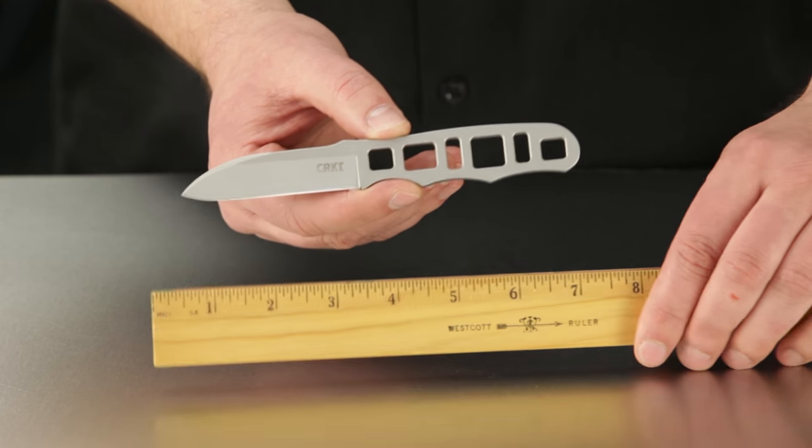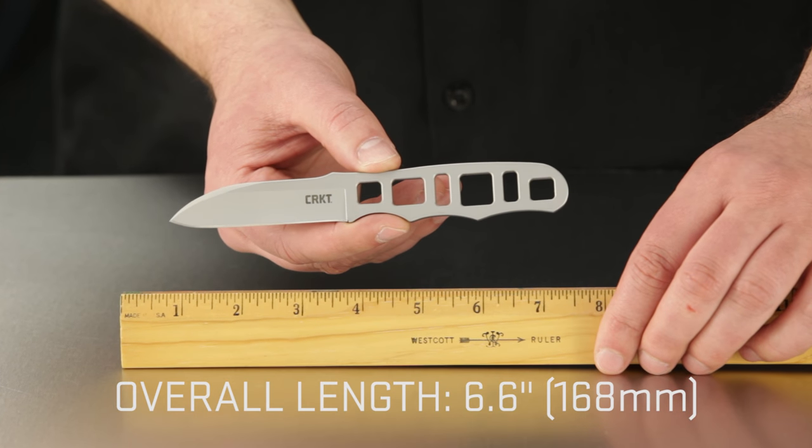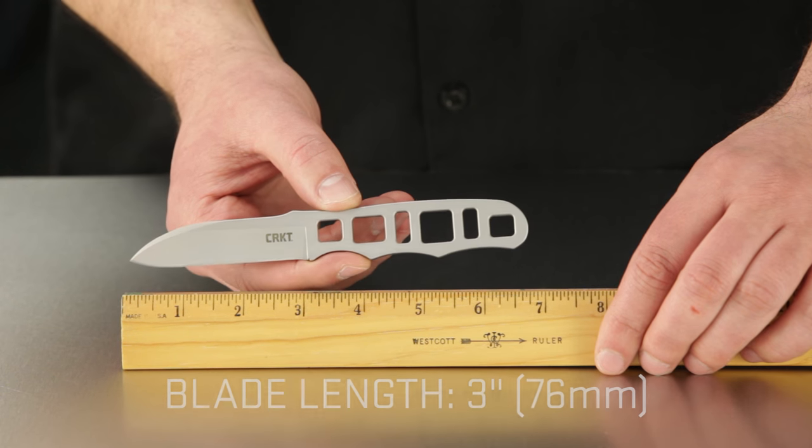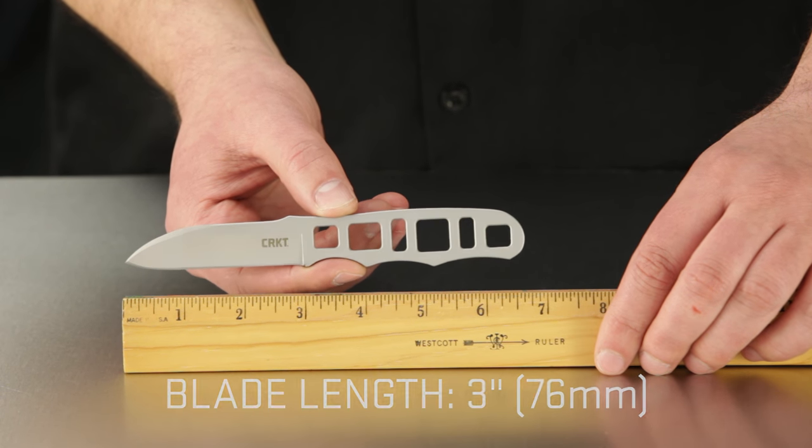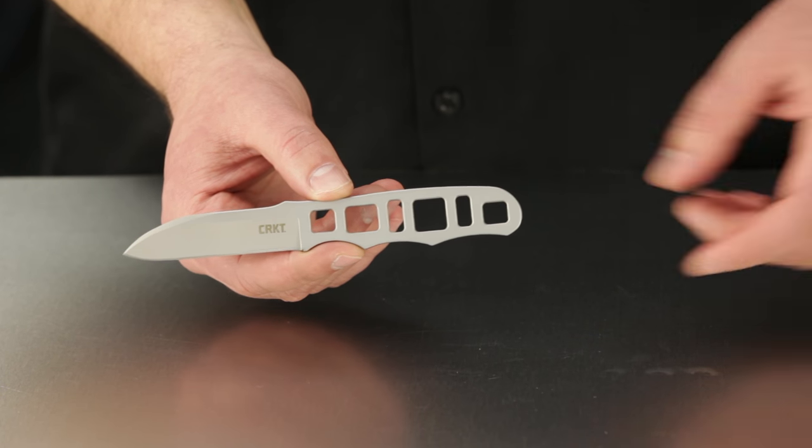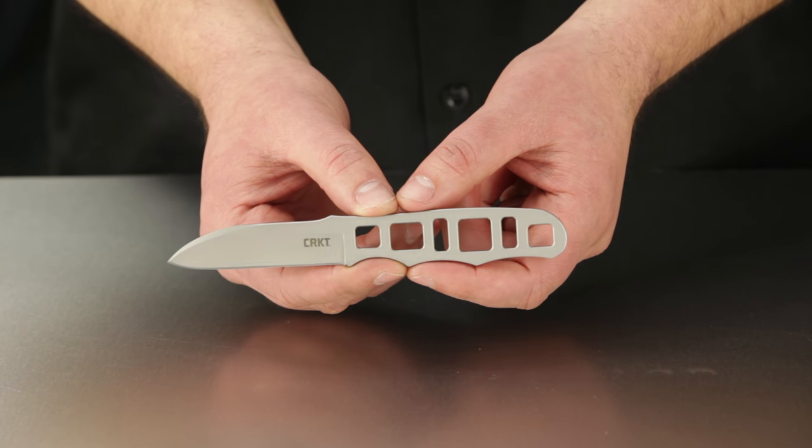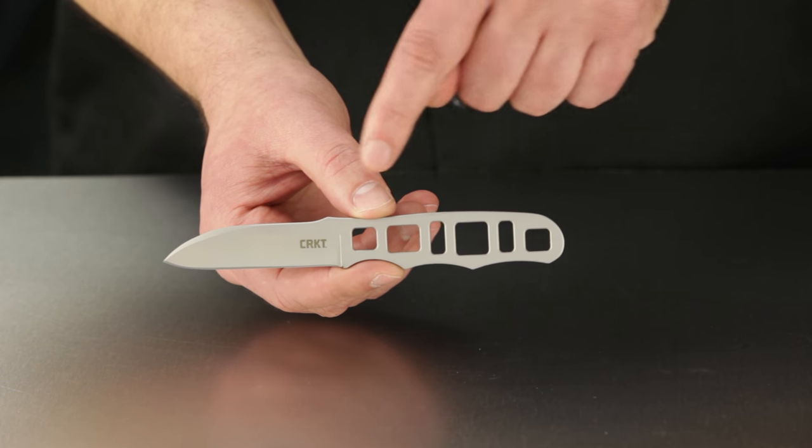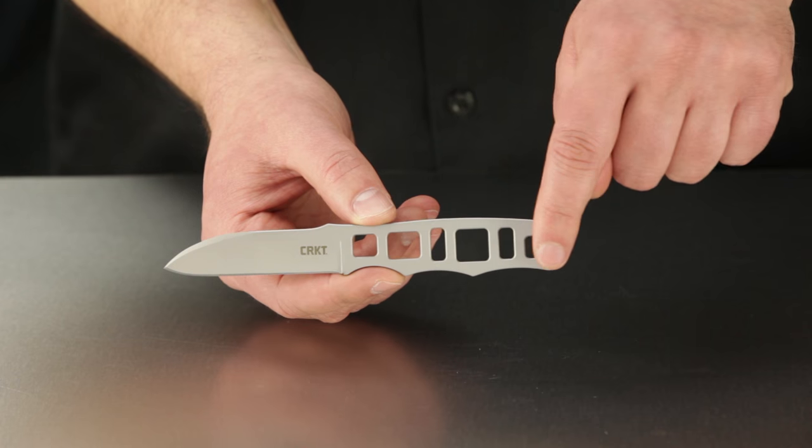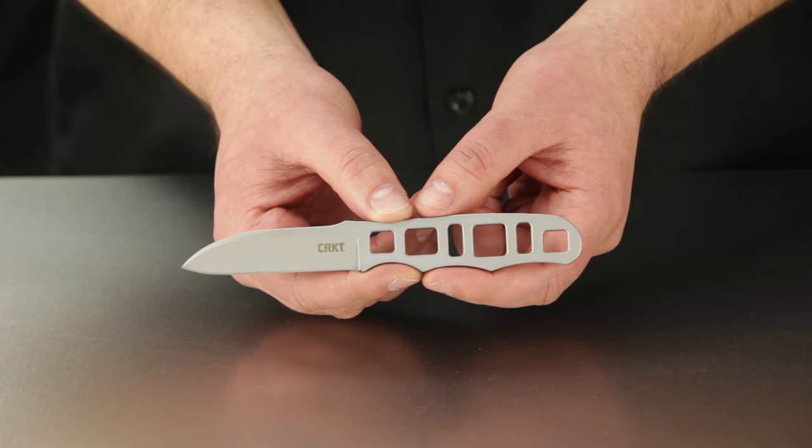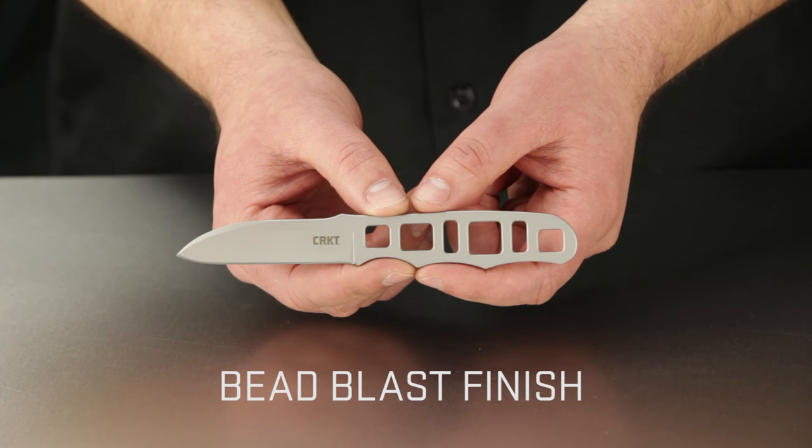The overall length of the tool is approximately 6.6 inches. The blade itself is just under 3 inches. The whole knife is one slab of stainless steel including the weight-saving skeletonized handle, and it's finished with a corrosion-resistant bead blast finish.